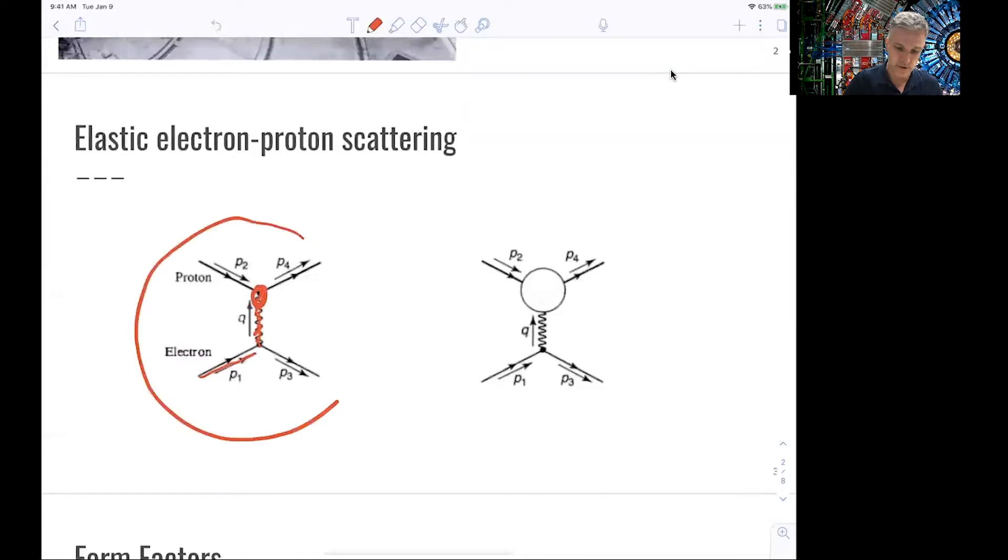We can start from this scattering process, which we already calculated, and we derived the Mott scattering cross-section formula. But we really want to consider this proton now as a blob. In elastic scattering, we are not destroying the proton, so we leave the proton intact in the scattering process.